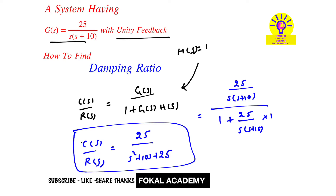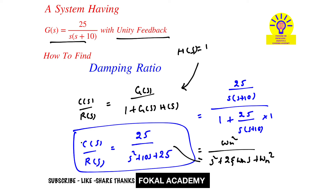The standard form of a second-order transfer function is ωn² / (s² + 2ζωn·s + ωn²). Comparing, we get ωn² = 25, so ωn = 5.